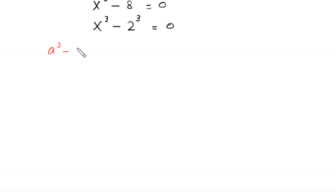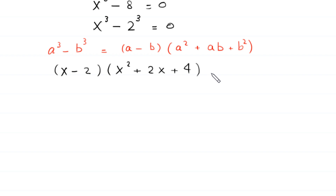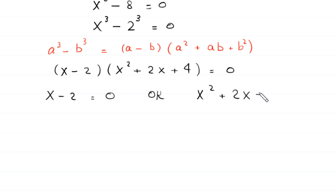Using the identity a³ minus b³ equals (a minus b)(a² + ab + b²), the expression x³ minus 2³ becomes (x minus 2)(x² + 2x + 4) equals 0. From here, either x minus 2 equals 0, or x² + 2x + 4 equals 0.